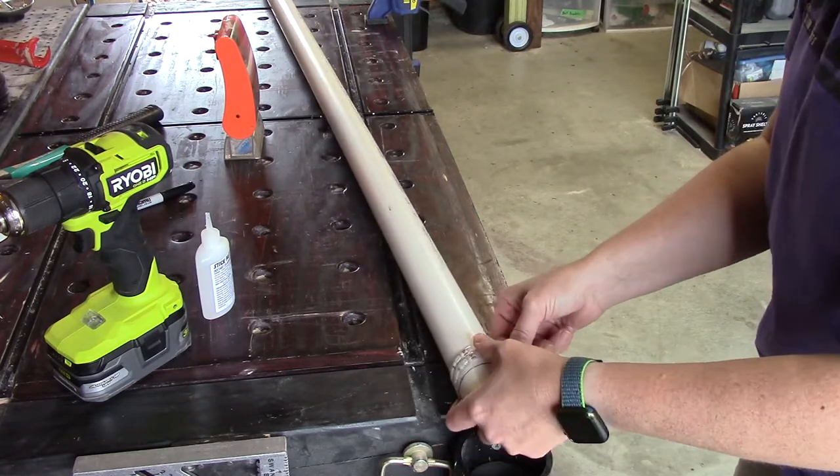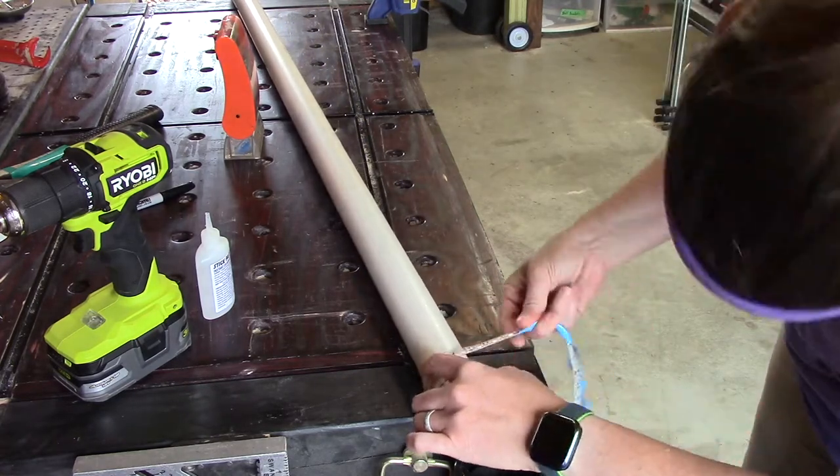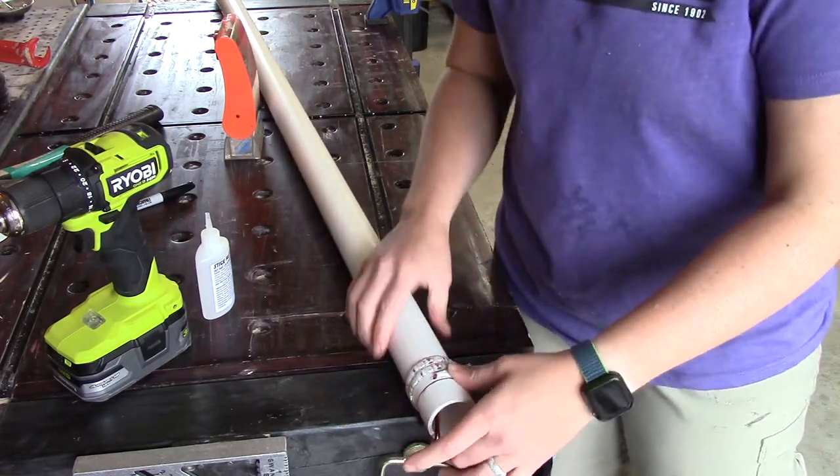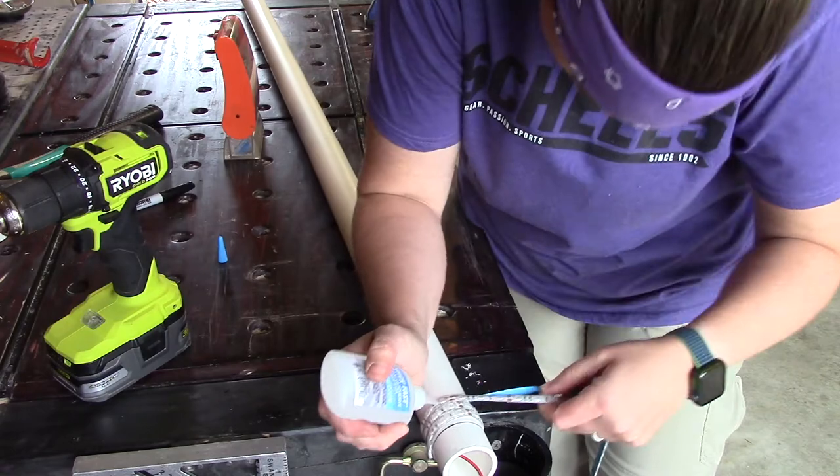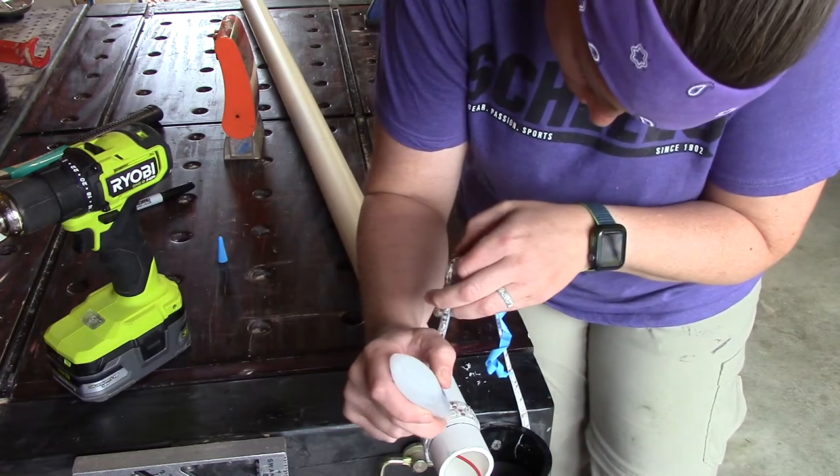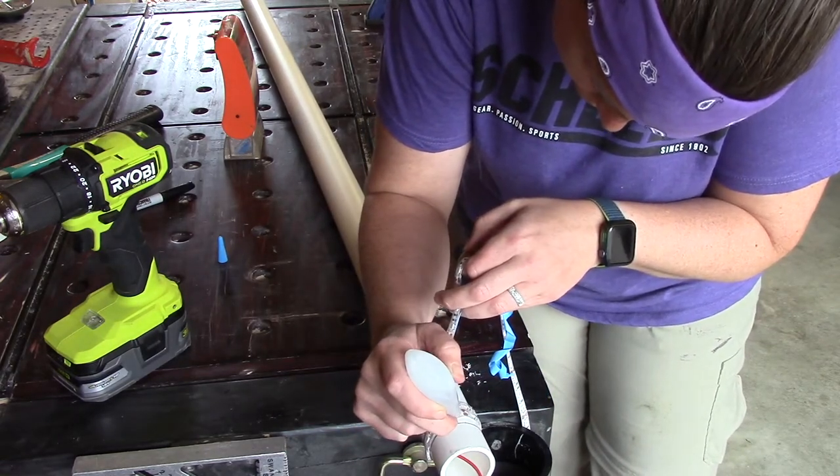Be mindful of the glue. If you get some on the outside of your light strip and it sticks to something and you pull, it can pull off the coating from the light strips and you would then have to seal that with some silicone to prevent water from damaging your lights.